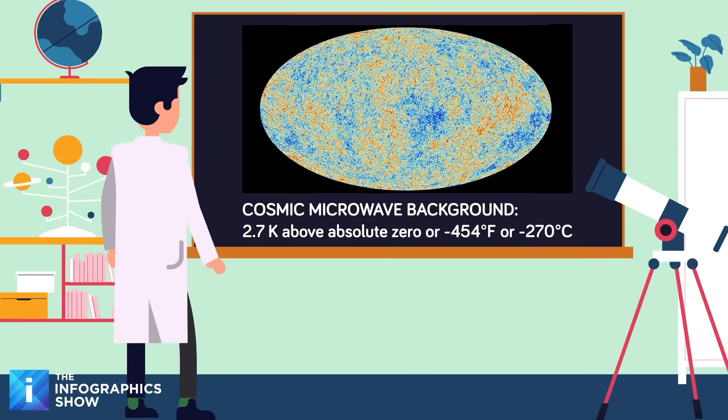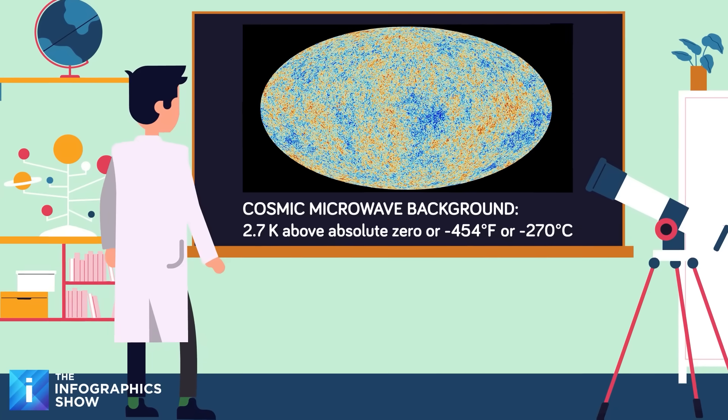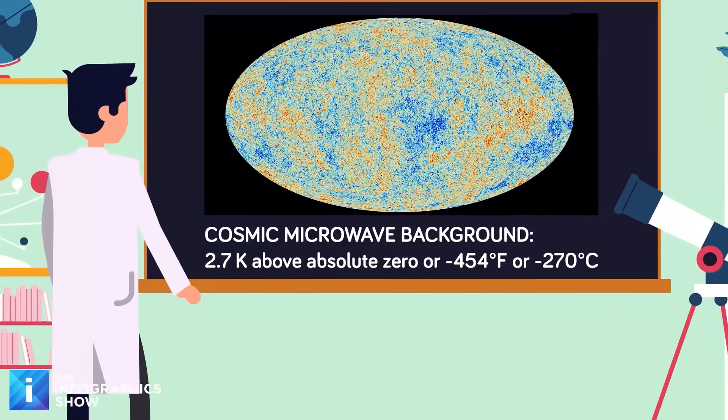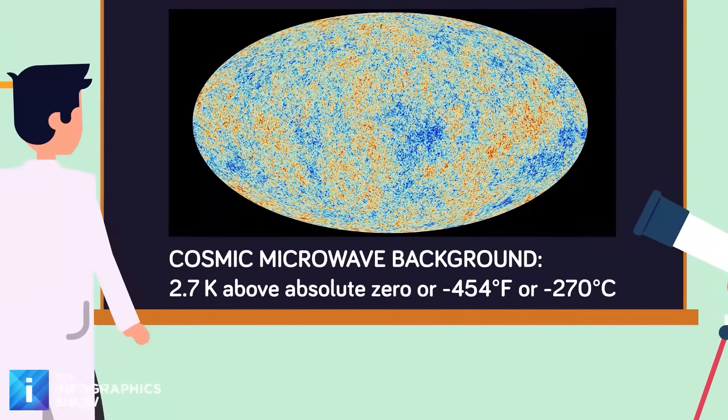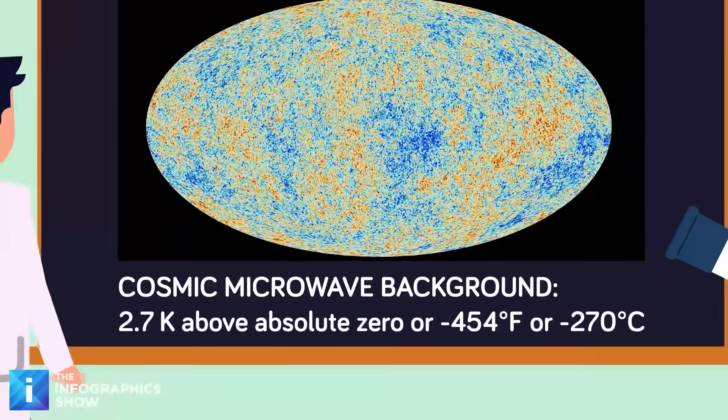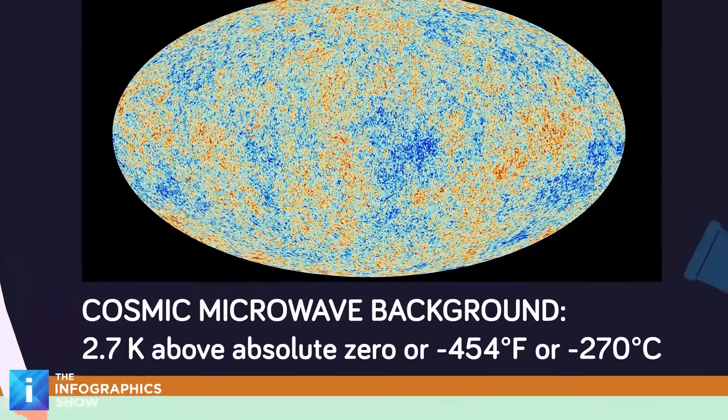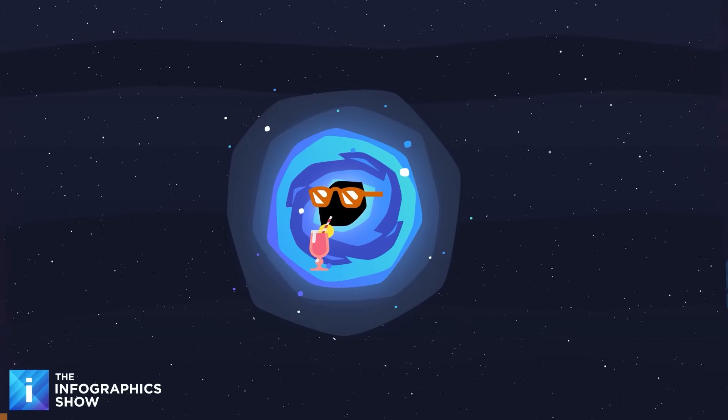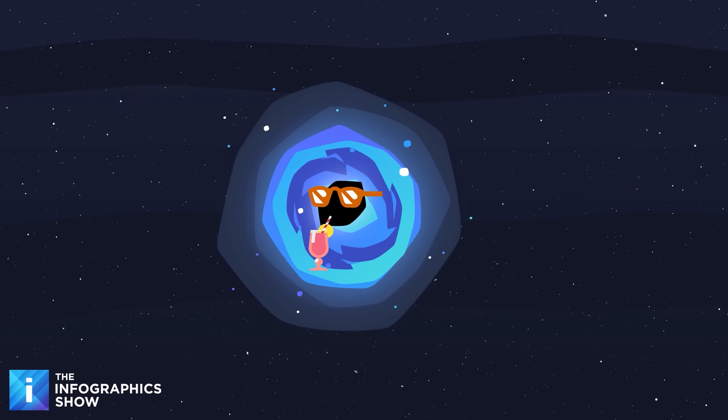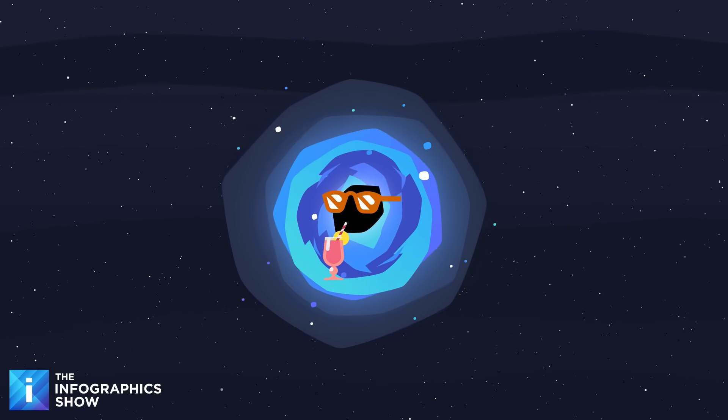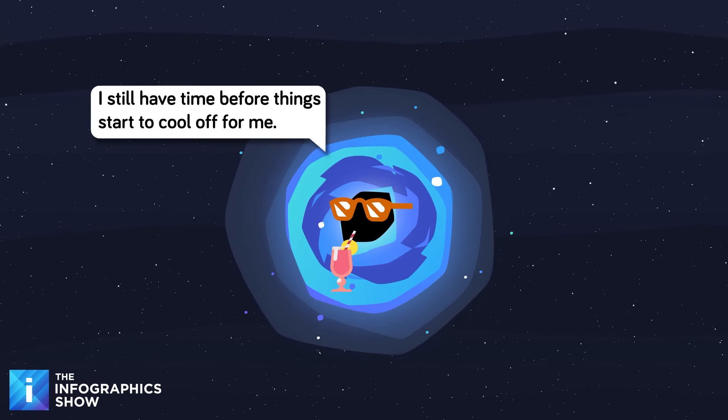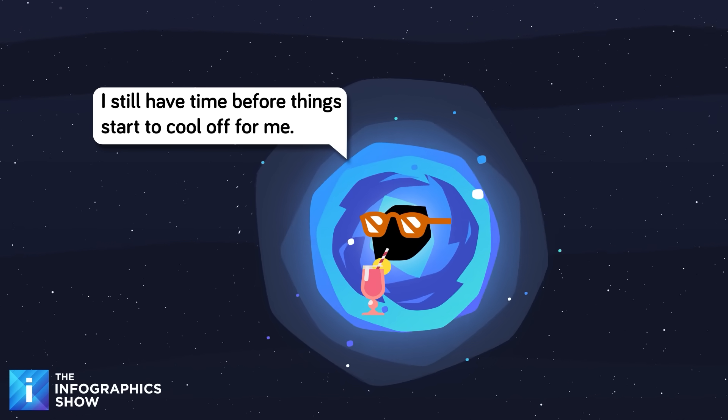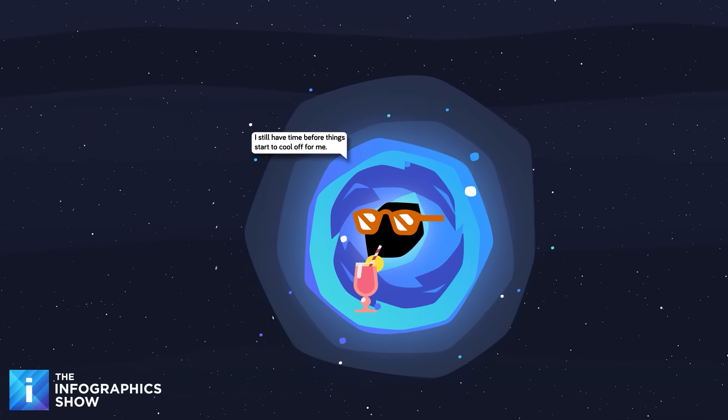Right now, the largest black holes in the universe are still growing because they are colder than their surroundings. The cosmic microwave background that fills all space has a temperature of about 2.7 Kelvin above absolute zero, or negative 454 degrees Fahrenheit. A supermassive black hole has a temperature millions of times lower. This means that black holes won't start shrinking until the universe cools so completely that the cosmic background temperature drops below their own. For the largest ones, that won't happen until the universe is thousands or even millions of times older than it is today.